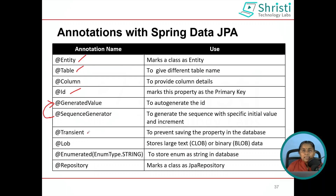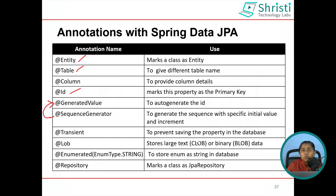At Transient: if this annotation is added above a property, that particular property will not be saved to the database table. At Lob: this is used for storing large text and binary large objects — that is CLOB and BLOB. At Enumerated: this is used for storing an enum as a string in the database. For example, in your table you have a property that can accept only a fixed set of values — like file type: READ, WRITE, READ_WRITE. These are the three values accepted for a particular column. When you pass the value as an enum, in the database it will be stored as a string value.